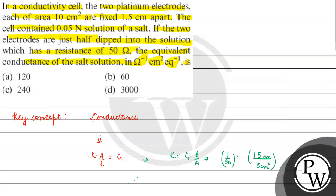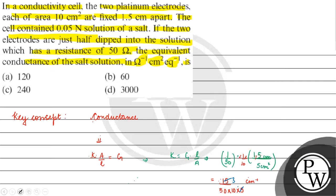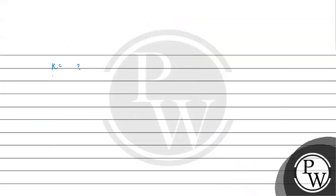The effective area we have is 5 cm², not 10 cm², because the electrodes are half dipped. Removing the decimal, we get 15 by 50 into 10 into 5. Cancelling 5, we get 3. So kappa equals 3 upon 500 ohm inverse cm inverse.